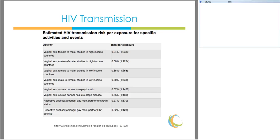This risk-per-exposure list describes which types of exposures carry the highest risk for HIV infection. It's very difficult to quantify this risk because it varies based on many different factors, including whether or not the HIV-infected patient is on antiretroviral therapy and whether or not they are adherent to their therapy. This graphic serves as a method of looking at types of risk exposures and estimating the risk-per-exposure percentage.